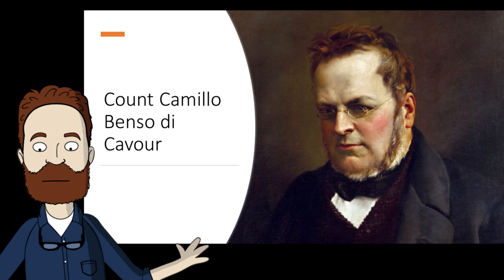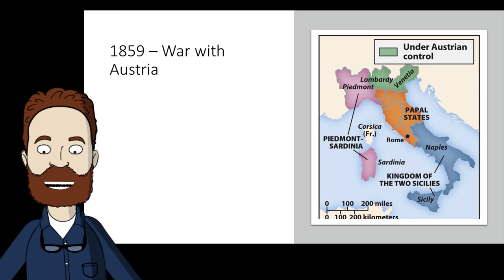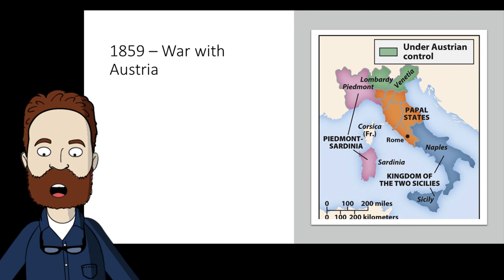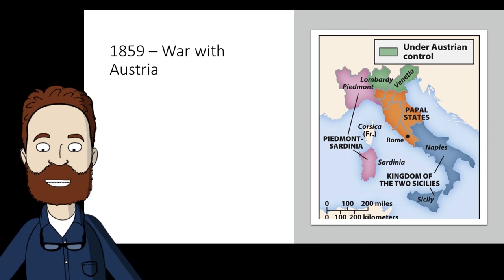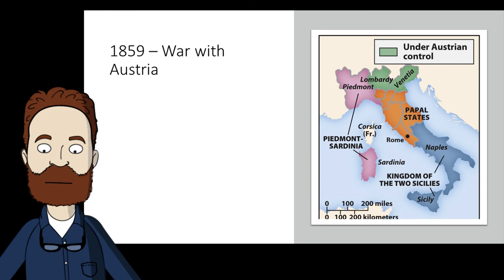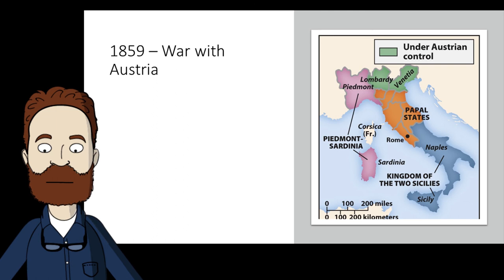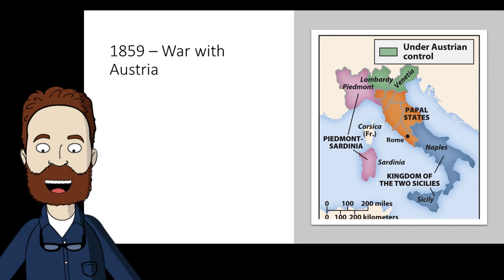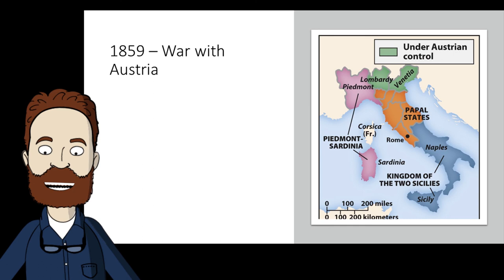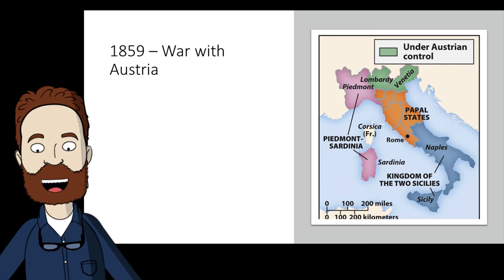He prepared the way for cooperation with Napoleon III against Austria. In 1858, Cavour held a secret meeting with Napoleon III to begin planning a war of liberation. In exchange for additional territory from Sardinia, France agreed to cooperate in ousting Austria — if Cavour could goad Austria into attacking Sardinia, France would come to Sardinia's defense.